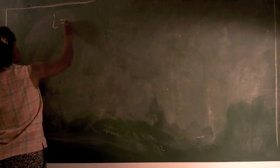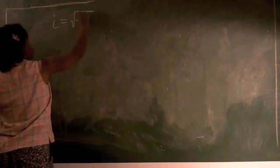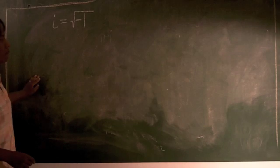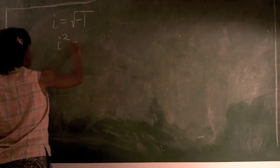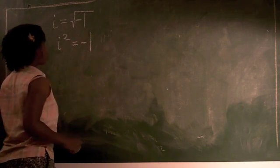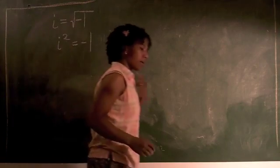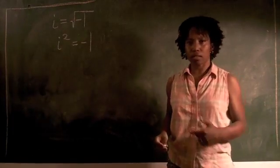i is equal to the square root of negative one. That means that i is a number, so that when we square it, i squared is equal to negative one. If you think about that for a little while, you'll see why it's unusual.